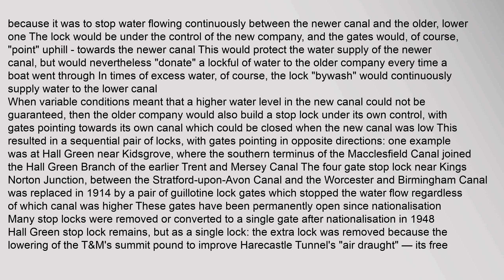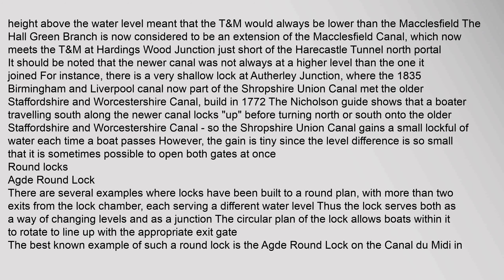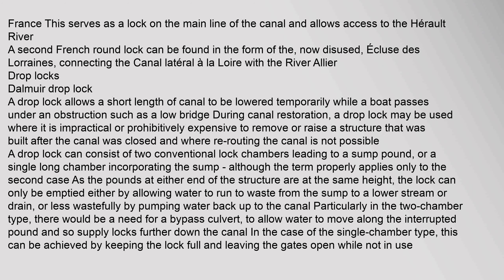Many stop locks were removed or converted to a single gate after nationalization in 1948. A round lock in France serves as a lock on the main line of the canal and allows access to the Arrow River. A second French round lock can be found in the now disused écluse de la Raines connecting the Canal Latéral à la Loire with the River Allier.